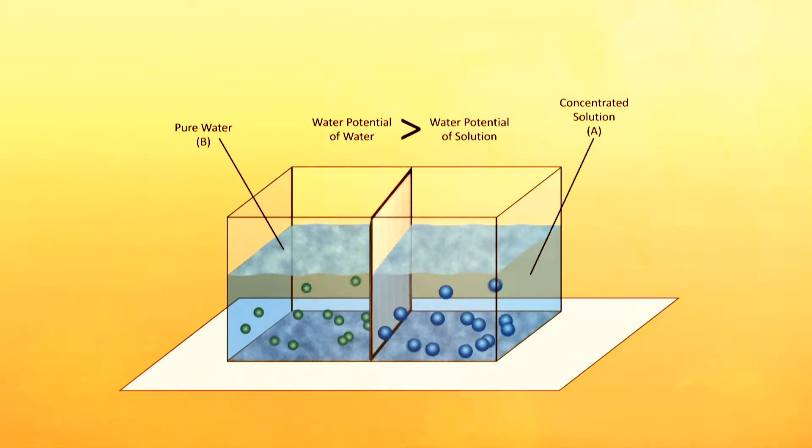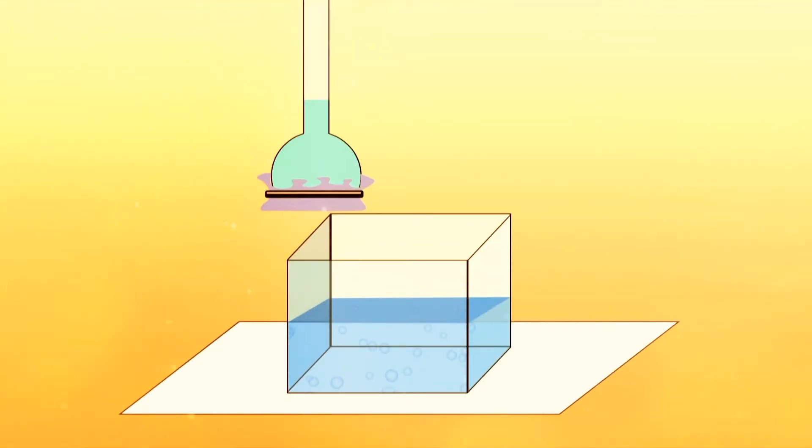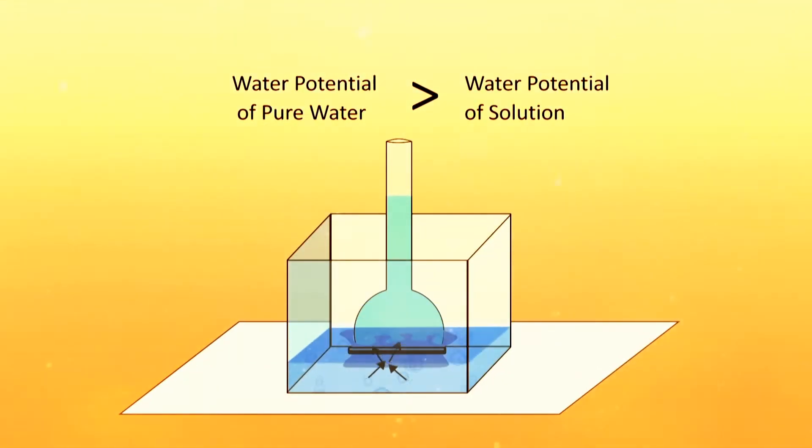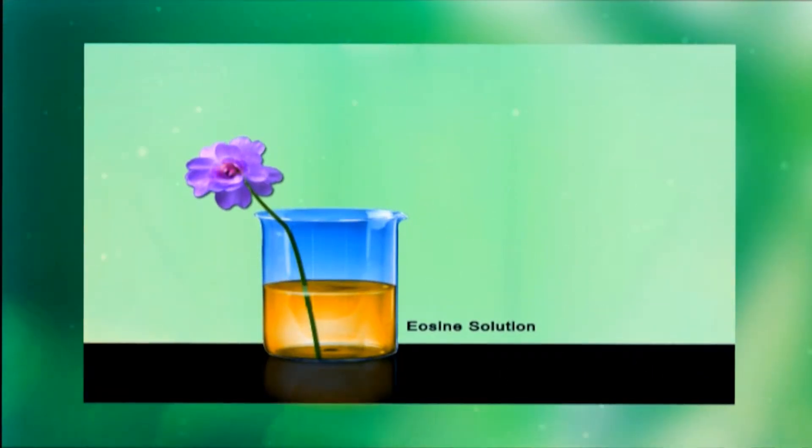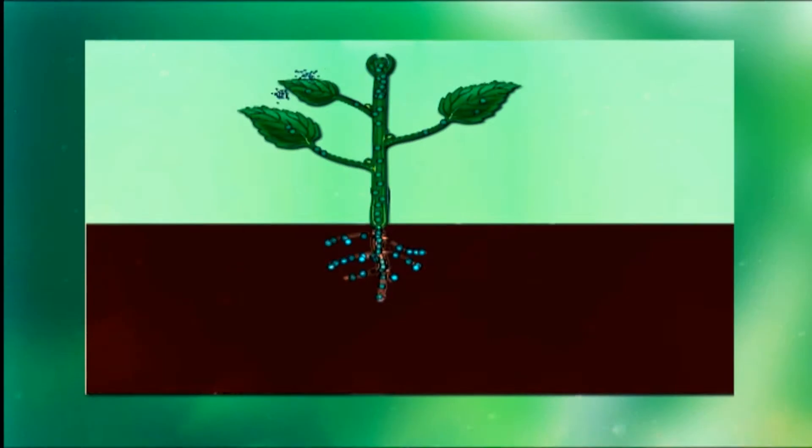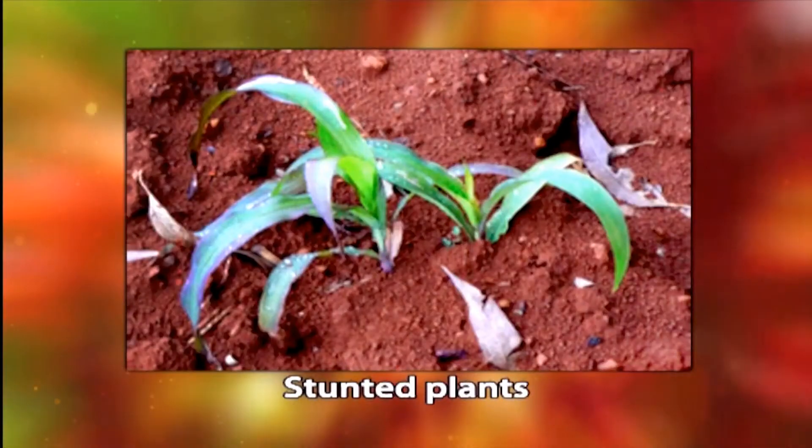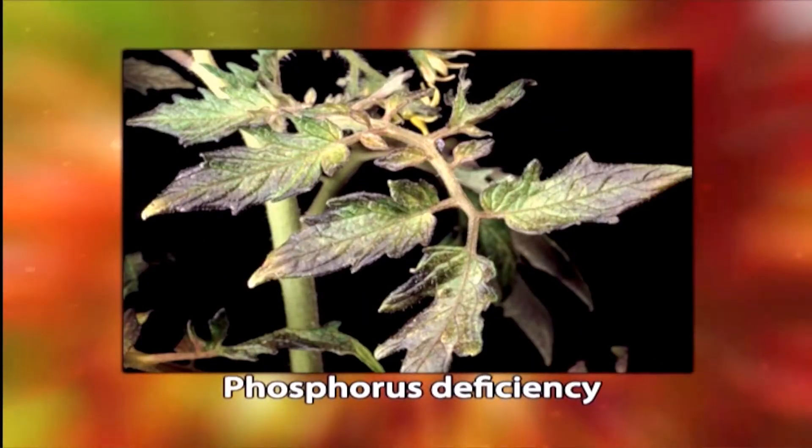The objectives of this course are to give the target students an understanding of water potential and its components and how they drive the flow of water, how the ascent of sap occurs in xylem, transpiration and mechanism of stomatal movement, the importance of mineral nutrition, especially the role and deficiency symptoms of essential elements.